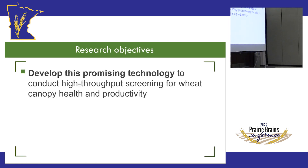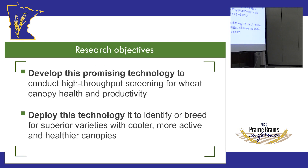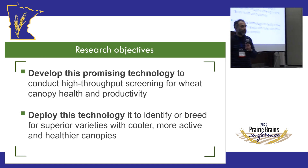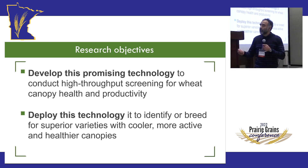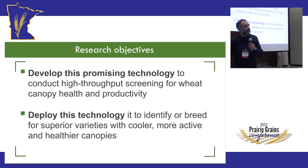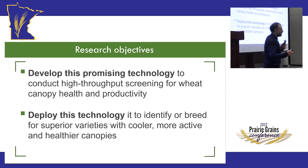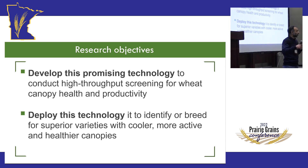The next question was: does this work on wheat? Our research objectives were twofold: first, to develop this promising technology at a high-throughput level — scaling from seven genotypes to hundreds and hundreds of lines — and then deploy it to help breeders identify superior varieties and hopefully identify genetic markers associated with this performance, which would be our top objective.